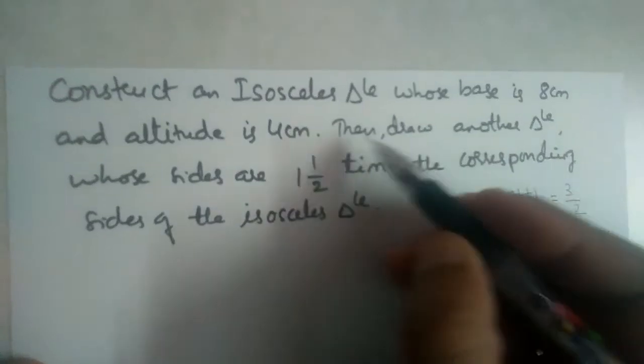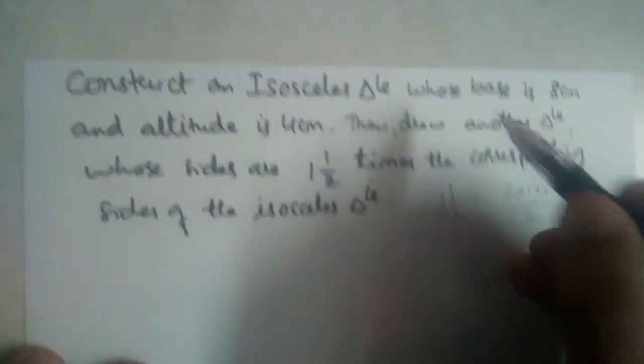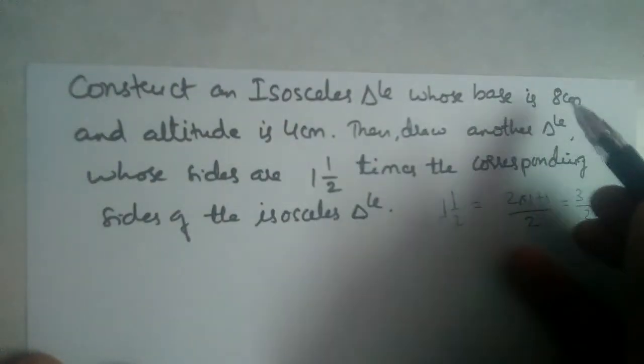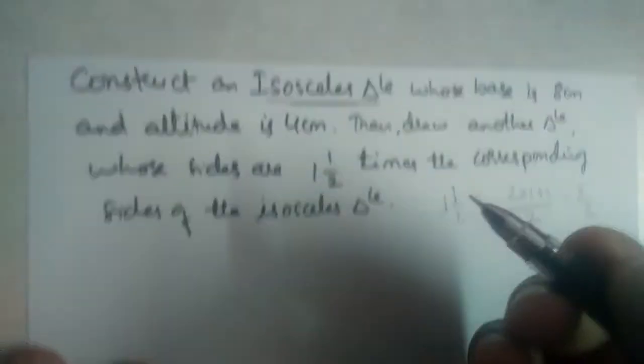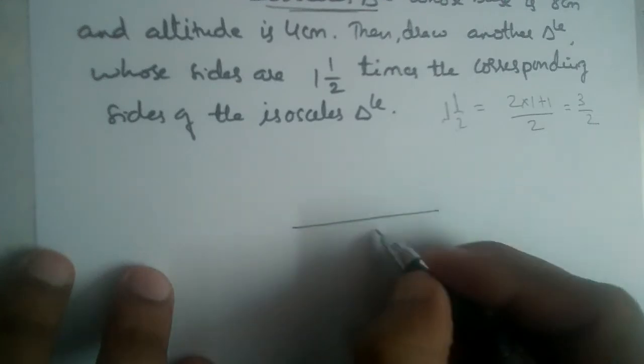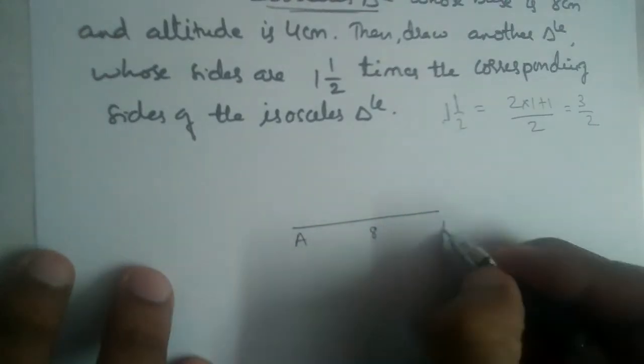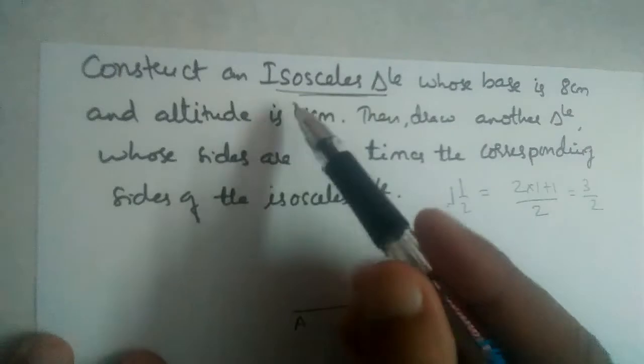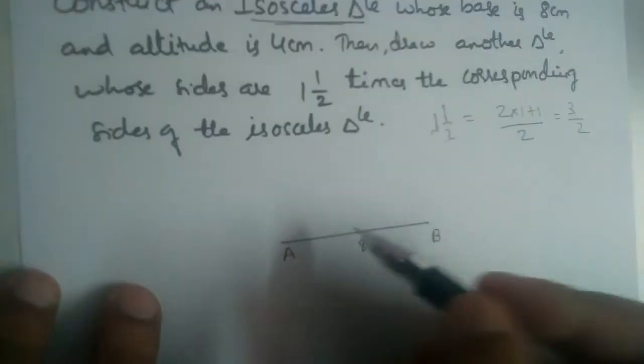First let us draw a rough diagram. Base should be 8 cm and it should be an isosceles triangle. So this is 8 cm base. Let us take this as AB. Isosceles triangle means two sides should be equal.